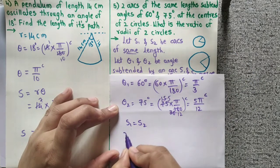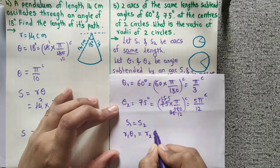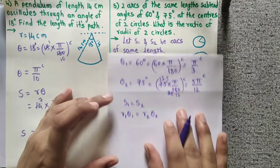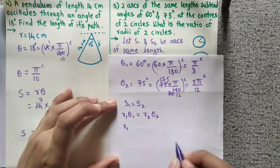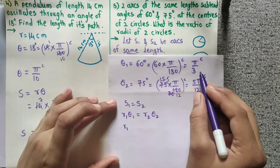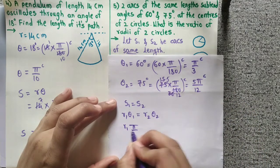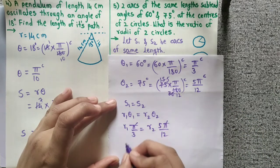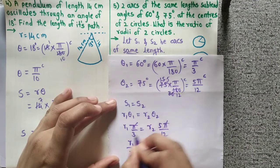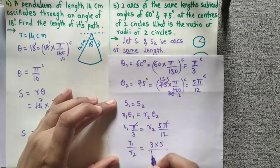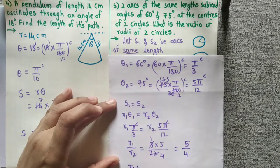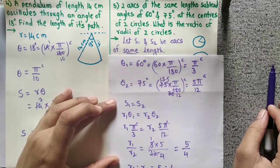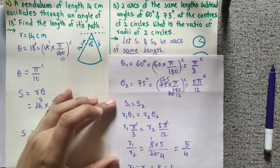This means R1 times theta1 equals R2 times theta2. We need the ratio R1 to R2. Theta1 is pi by 3 and theta2 is 5 pi by 12. Pi cancels. R1 upon R2 equals 3 into 5 upon 12. Three ones are 3, three fours are 12. So R1 to R2 equals 5 to 4.